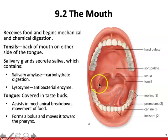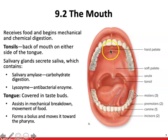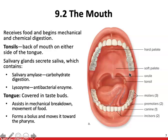The tonsils are made out of lymphatic tissue, which helps protect us against disease coming in through the mouth and nasal passageways. There is also a single pharyngeal tonsil in the nasal pharynx, commonly referred to as the adenoids, which also helps protect against infectious diseases coming in through the nose and mouth.